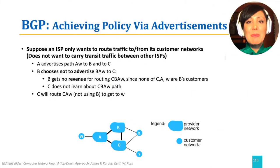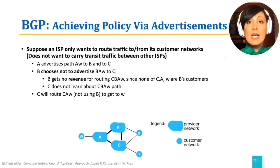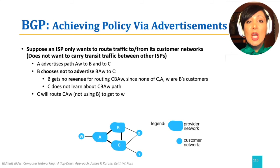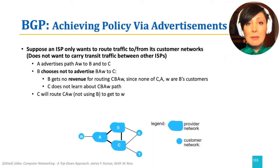As previously discussed, BGP can enforce policies. Using policies, ISPs can control their traffic. For example, suppose we have a network with A, B, and C as provider networks and W, X, and Y as customer networks. A advertises path AW to both B and C. But B does not want to route C's traffic to A or W — this might be because there is no revenue in doing so, or for security reasons. This is achieved by B not advertising BAW to C, so C will never learn about the path CBAW to destination W, and will always route CAW, not using B to get to W.